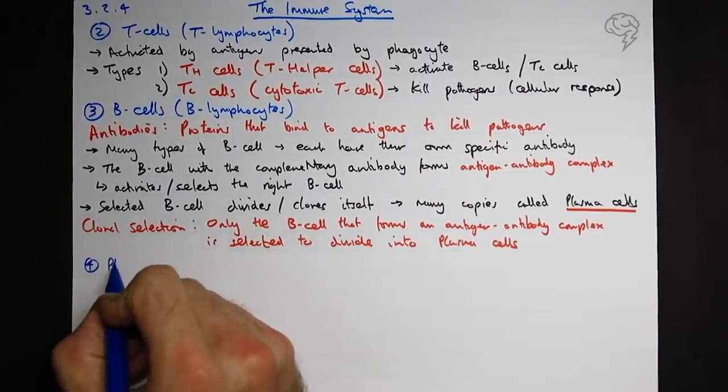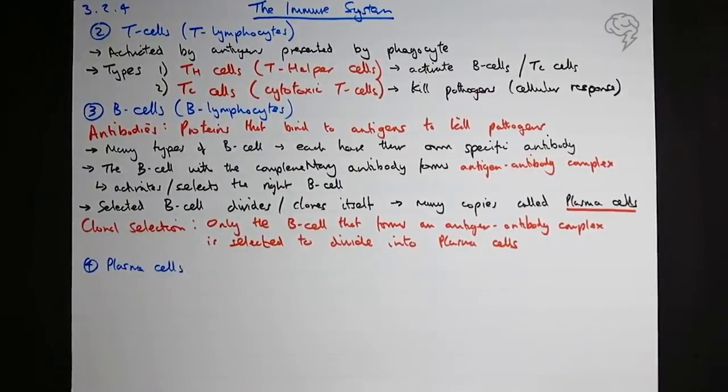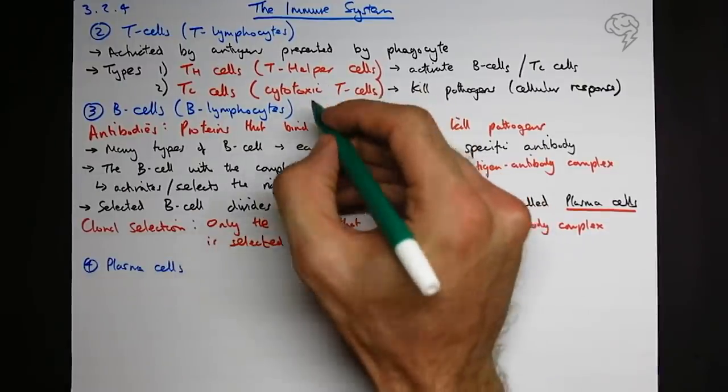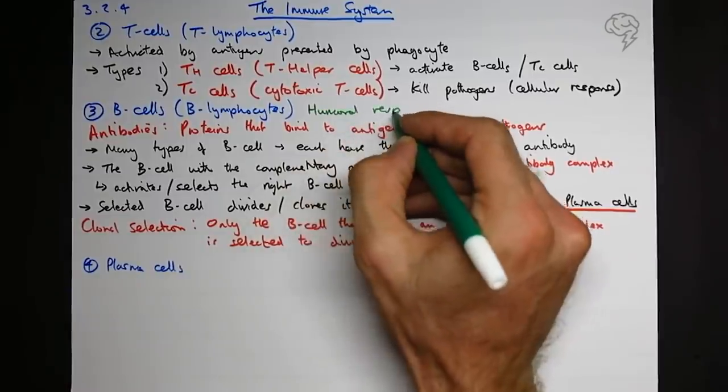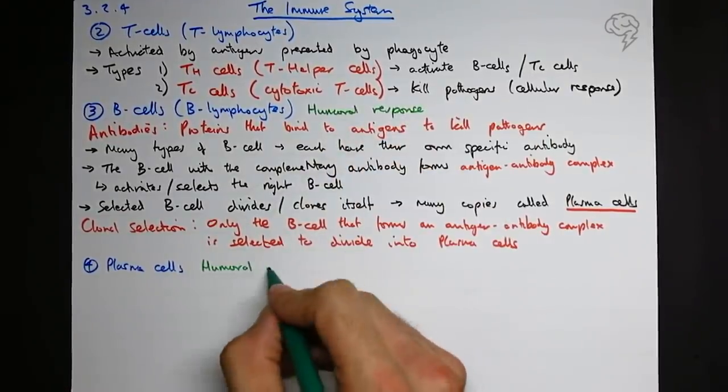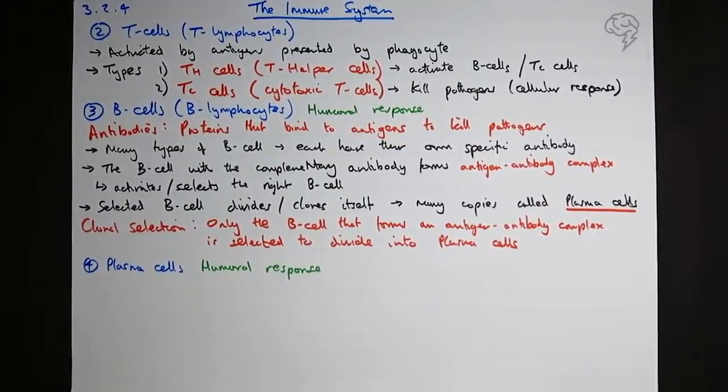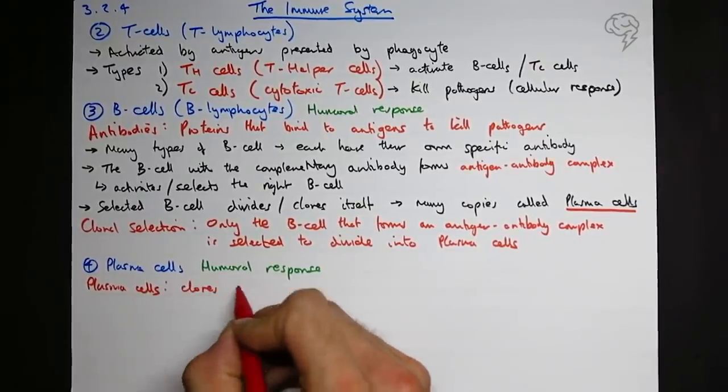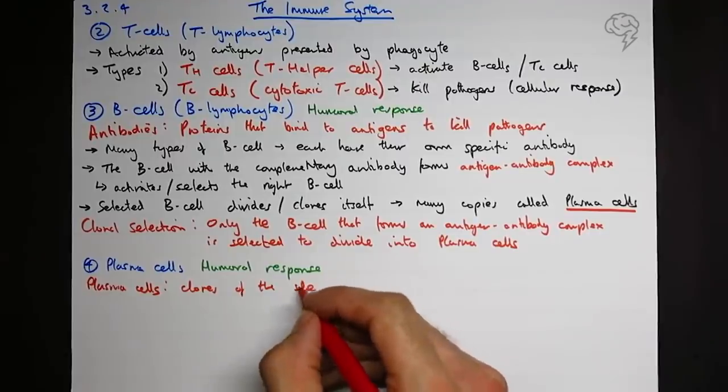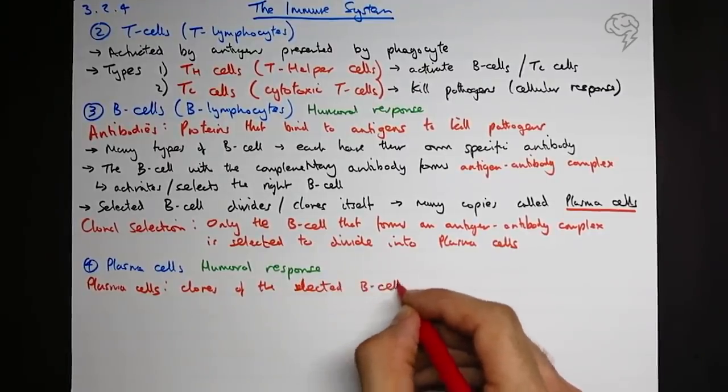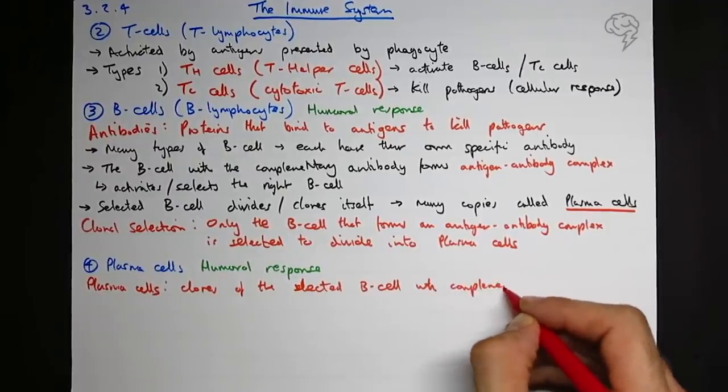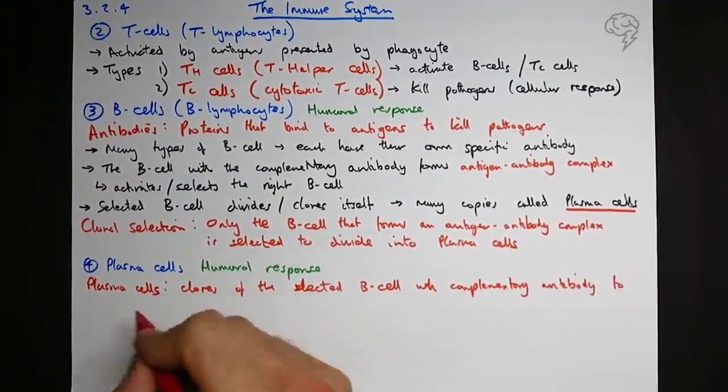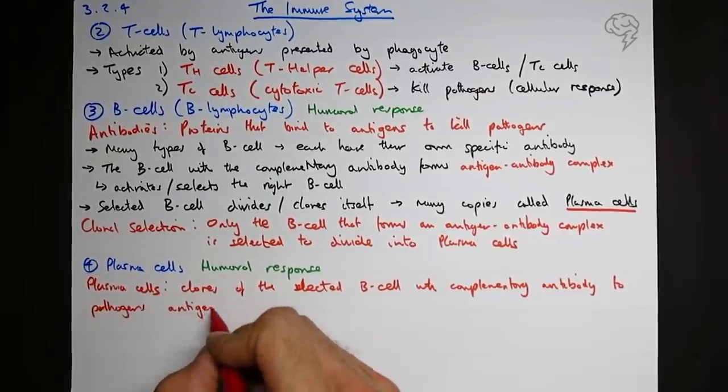And then the last stage, stage four, is plasma cells. These don't really have any extra name. What I am just going to add to this: both of these guys are making antibodies. Any immune response involving antibodies is humoral response. This comes up very rarely but it is a constant source of confusion. So what are the plasma cells? Let's define plasma cells. They are clones of B-cells of the selected B-cell, selected B-cell with complementary antibody to the pathogen's antigen. Lots of confusing terminology here. Just be nice and clear, get it clear in your head which one's which.